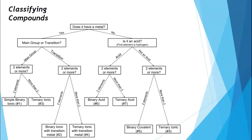Now let's talk about how to determine more specifically what type of compound we have. When you start looking at chemical naming, it's important to know exactly what type of compound you have — not just if it's ionic or covalent, but whether it's a binary ionic, ternary ionic, or covalent compound, whether it contains a main group or transition metal, or whether it's an acid. You should have a classification flow chart in your unit folder — follow along with me to learn how to use this resource.